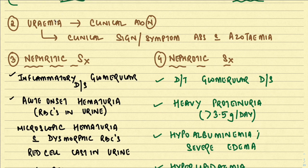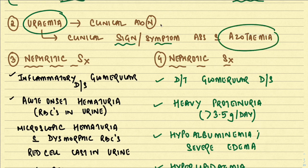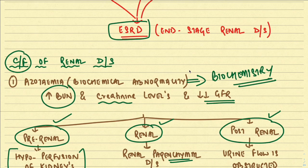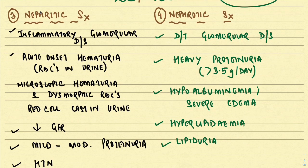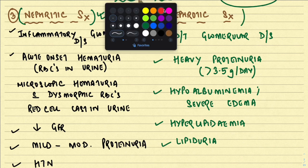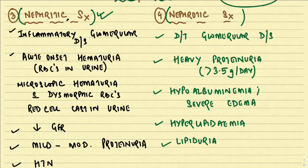The second important clinical feature is uremia. Azotemia is the biochemical abnormality, and the clinical signs and symptoms that result from azotemia are called uremia. So uremia is a clinical abnormality whereas azotemia is a biochemical abnormality. The third important clinical presentation of renal disease is nephritic syndrome or nephrotic syndrome. Nephritic syndrome is an inflammatory glomerular disease — there is inflammation of the glomerulus.